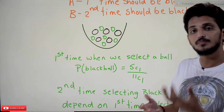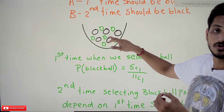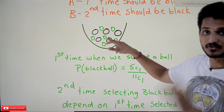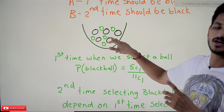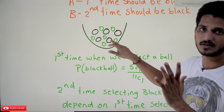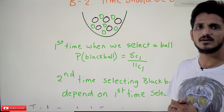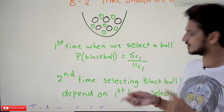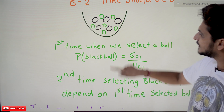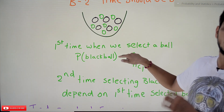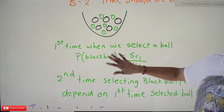If you pick a green ball first time, the probability of picking a black ball second time is different — because then there are 10 balls remaining with 5 black balls. If you pick a black ball first time, only 4 black balls remain, so the probability becomes 4C1 divided by 10C1. The second pick completely depends on the first event — that is what dependent probability means.